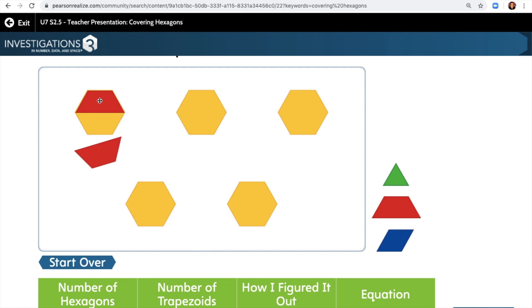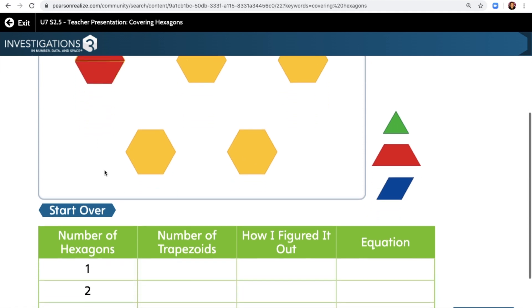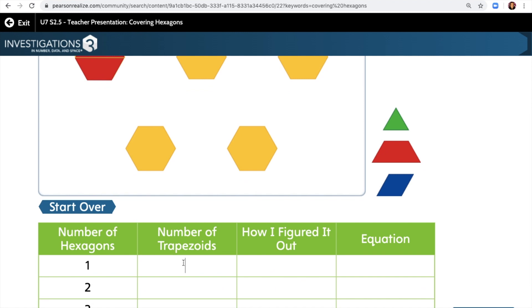I'm sure you're going to be way better at doing this than I am. Okay, that looks close. So it looks like one hexagon needs two trapezoids. I figured it out by putting one trapezoid and one trapezoid. So my equation is just two because I only have one hexagon.